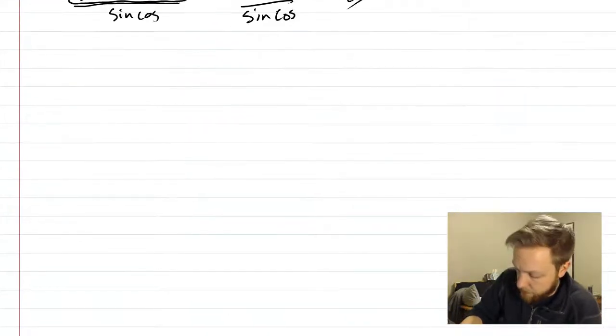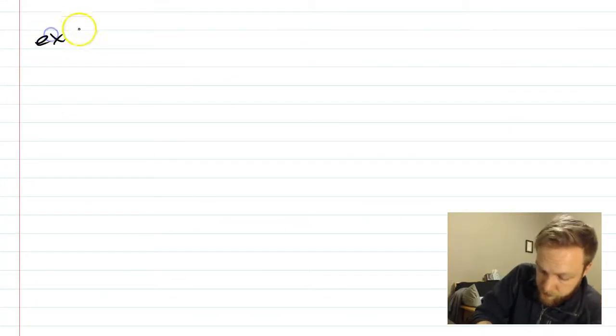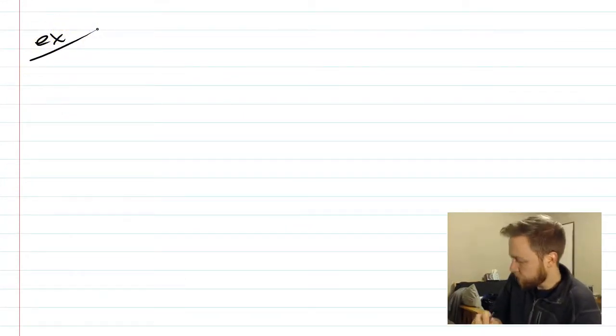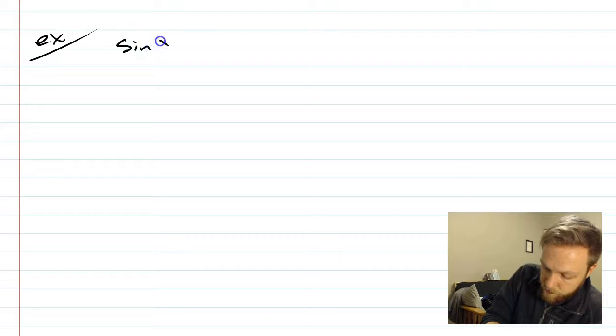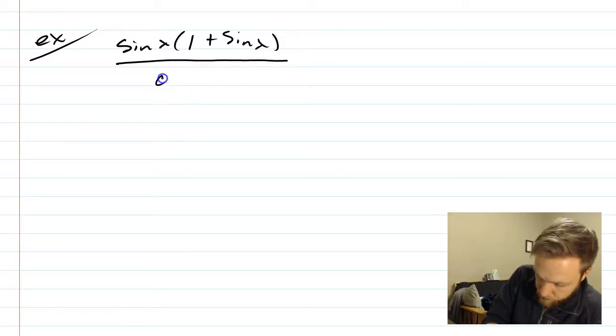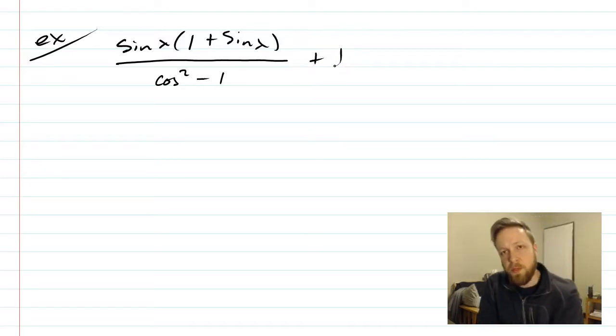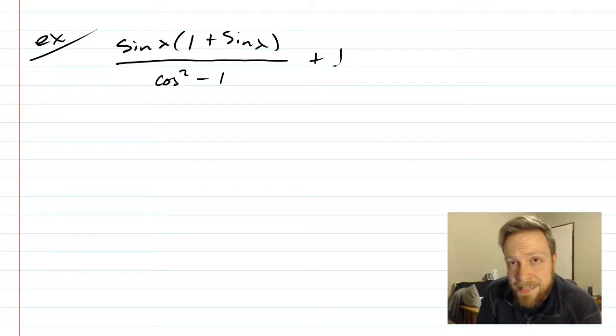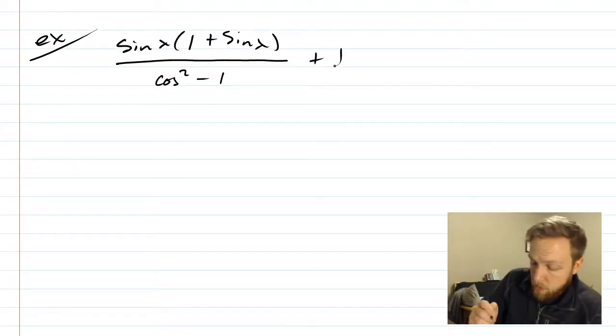Last example here. Now I'm showing this one because there are some issues with negatives. Sometimes you end up with a negative using a Pythagorean identity, and often students will drop it. So I'm going to show you an example how to keep it in.